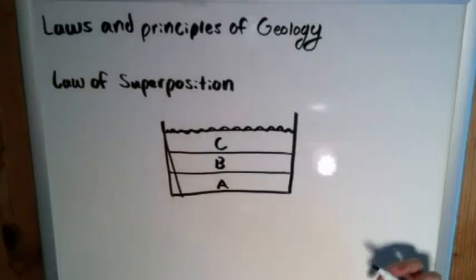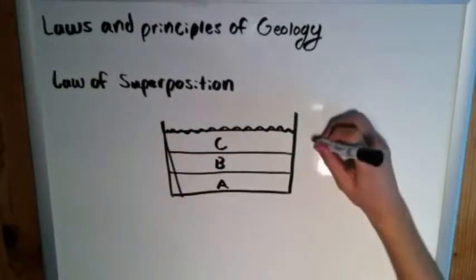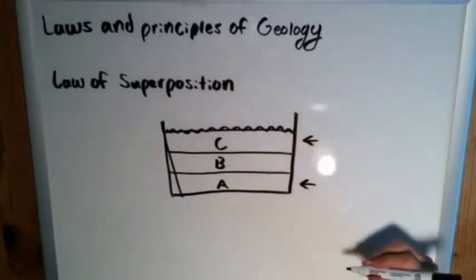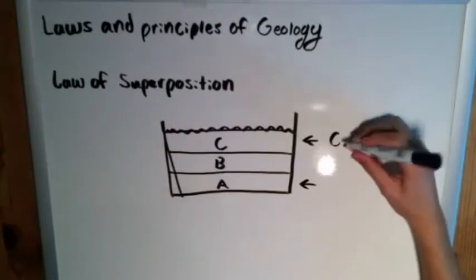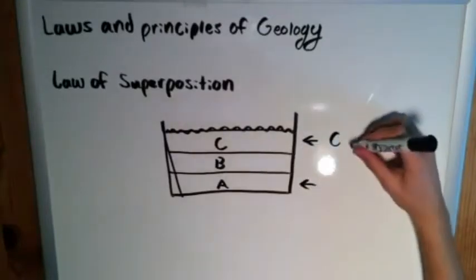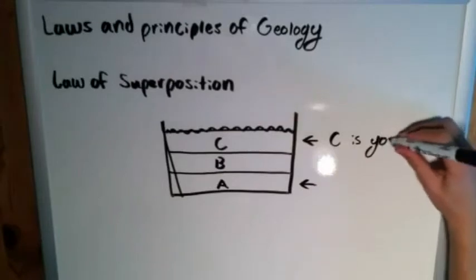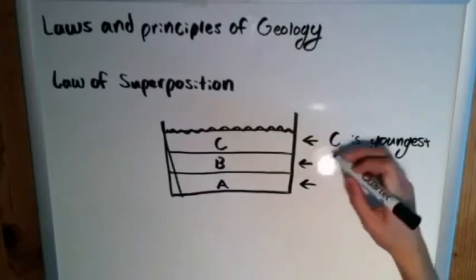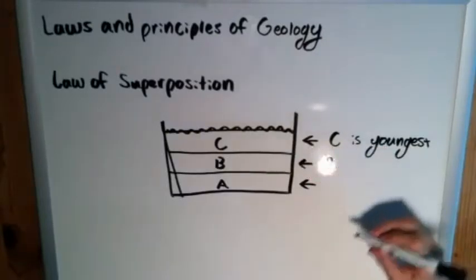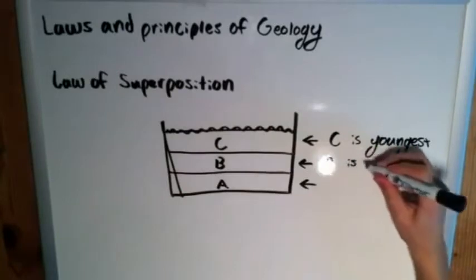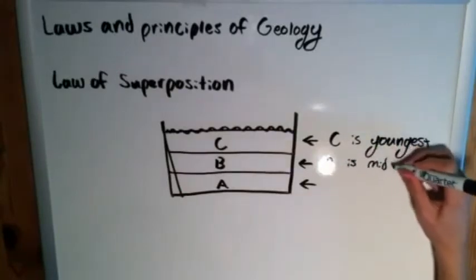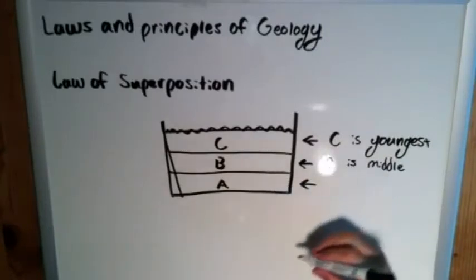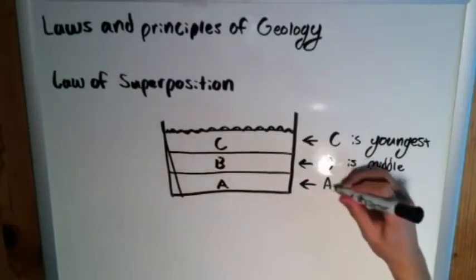Well, the law of superposition simply states that since C, relative to A, is above it in this cross-sectional view, C must be younger than A. And by that same logic, B must be younger than A, but older than C. So B is in the middle. And A, since it is at the very bottom, must have been deposited first, and is therefore the oldest.